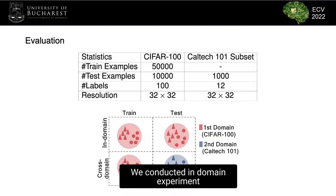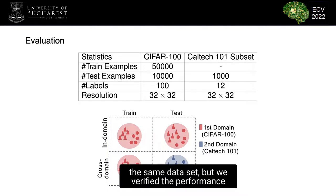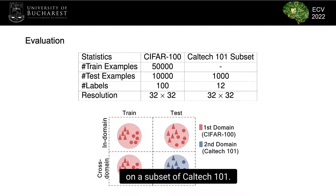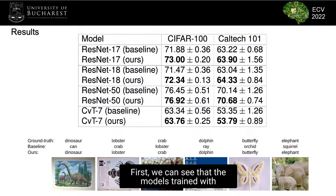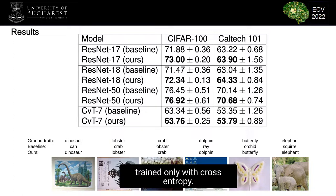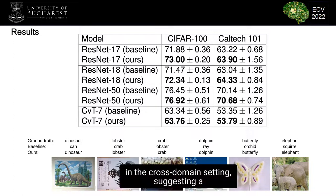We conducted in-domain experiments on the CIFAR dataset, while for cross-domain experiments we trained the models on the same dataset but verified the performance on a subset of Caltech-101. The results show that models trained with our losses perform better than the baselines trained only with cross-entropy. Moreover, our method increases the accuracy in the cross-domain setting, suggesting a better generalization capacity for our approach.